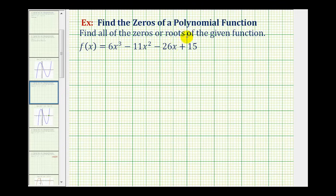We want to find all of the zeros or roots of the given polynomial function. To do this, we have two options.